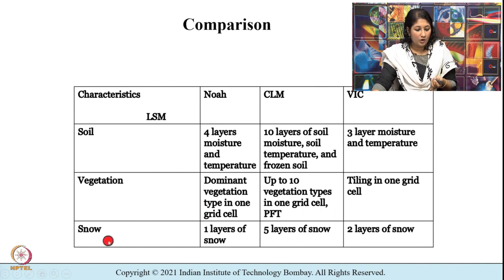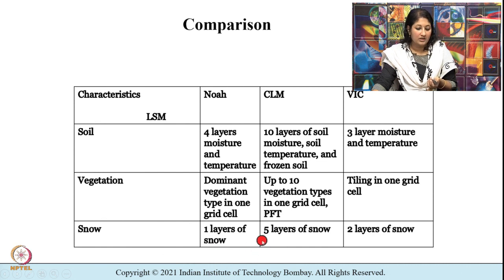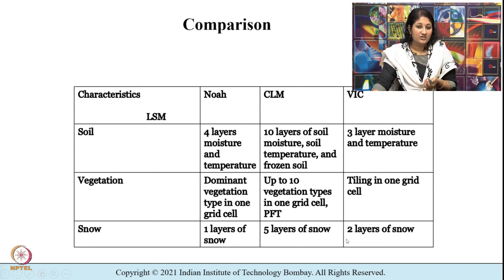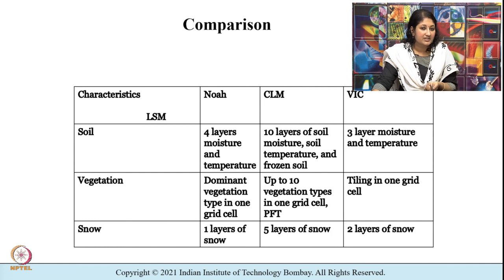A simple comparison between the NOAA, CLM, and VIC models is summarized in this table. With respect to soil, the NOAA model has 4 layers of soil moisture, CLM has 10 layers, and VIC has 3 layers of moisture and temperature. For vegetation, NOAA uses the dominant vegetation type for one grid cell, CLM allows up to 10 vegetation types in one grid cell, and VIC uses tiling in one grid cell. For snow, NOAA has 1 layer, CLM has 5 layers, and VIC has 2 layers. Different land surface models have different underlying characteristics — that is what I want to emphasize through this table.